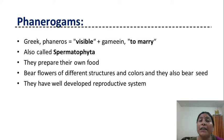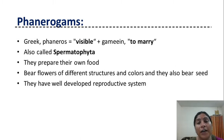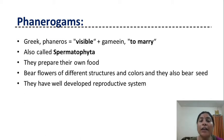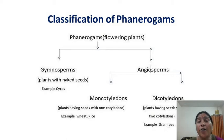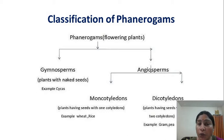They prepare their own food material. They bear flowers of different structures and different colors, and also bear different types of seeds. They have a well-developed reproductive system. Phanerogames are classified into two groups: the first is Gymnosperms and the second is Angiosperms.